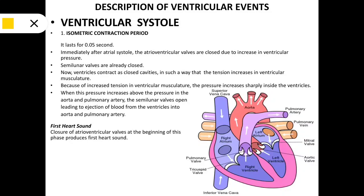Immediately after atrial systole, the atrioventricular valves are closed due to the increase in ventricular pressure. The semilunar valves are also closed. Now, ventricles contract as closed cavities in such a way that the tension increases in ventricular musculature. Because of the increased tension, the pressure increases sharply inside the ventricles. When this pressure increases above the pressure in the aorta and pulmonary artery, the semilunar valves open.